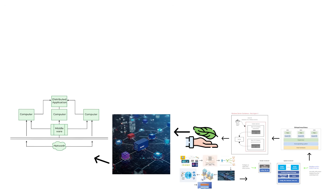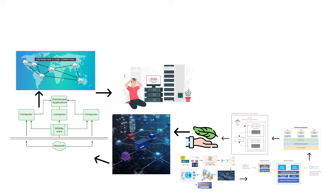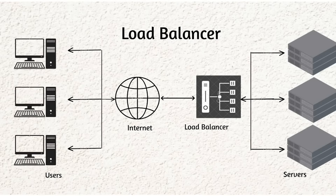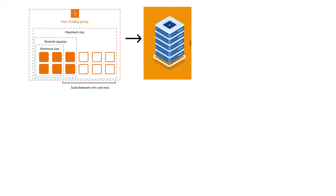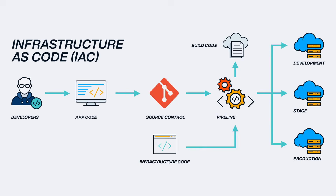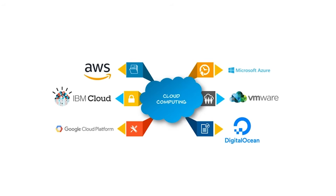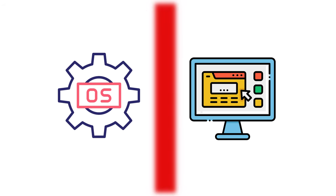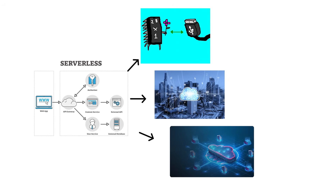Cloud operating systems are distributed by nature — your application doesn't run on one server, it runs across hundreds. If one server fails, the system automatically migrates your work to another. Load balancing distributes traffic across multiple instances. Autoscaling adds more servers when demand increases and removes them when it drops. Level 7 systems introduce infrastructure as code: you don't manually configure servers anymore — you write code that describes what infrastructure you need, and the cloud platform creates it automatically. In serverless computing, you just upload your code and the cloud platform handles everything else — you don't even know what operating system is running underneath.